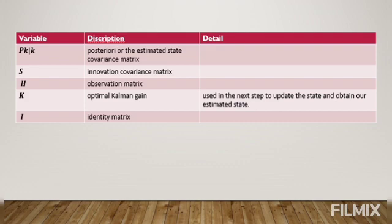The next step involves calculating the optimal Kalman gain K, which in turn is used to update the state and obtain the estimated state. The last equation is used to calculate the estimated state covariance matrix, where I represents the identity matrix.